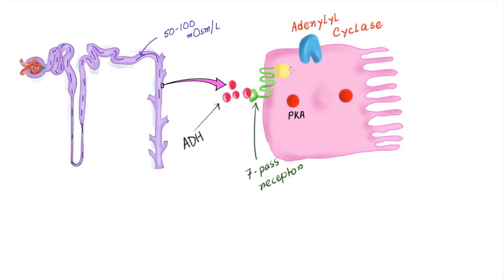Now let's see how ADH alters the cellular environment. Cells of this part of nephron have receptors for ADH. They are serpentine receptor or 7-pass receptor. ADH binds with this serpentine receptor which stimulates intracellular G protein.